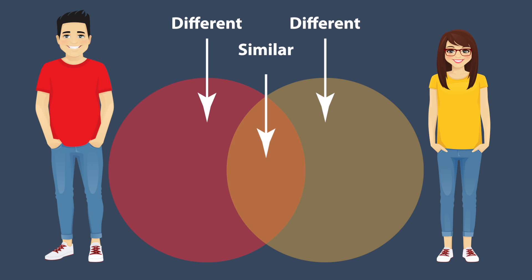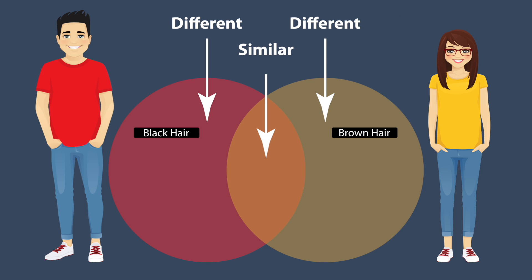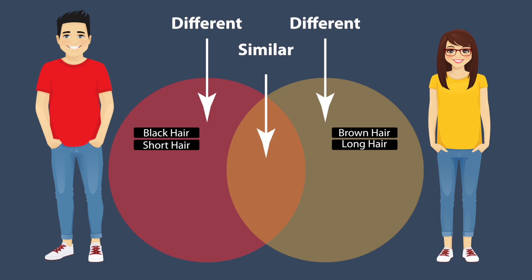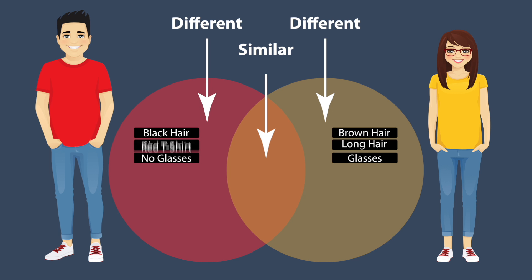The man has black hair, which goes in the red circle. The woman has brown hair, which goes in the yellow circle. The man has short hair. The woman has long hair. The man has no glasses. The woman has glasses. He is wearing a red t-shirt. She is wearing a yellow t-shirt.